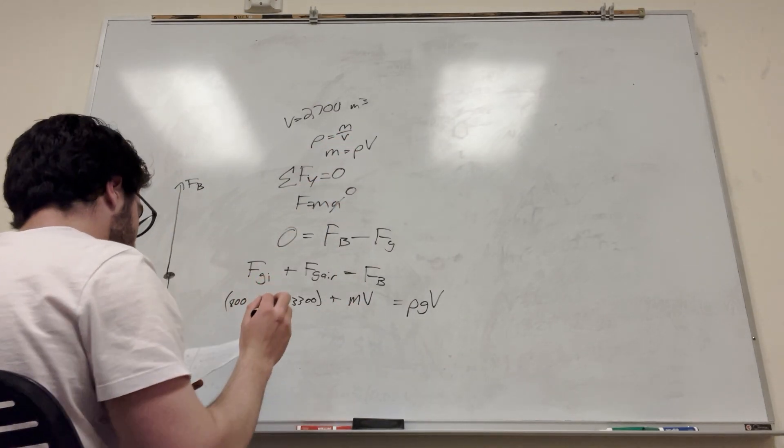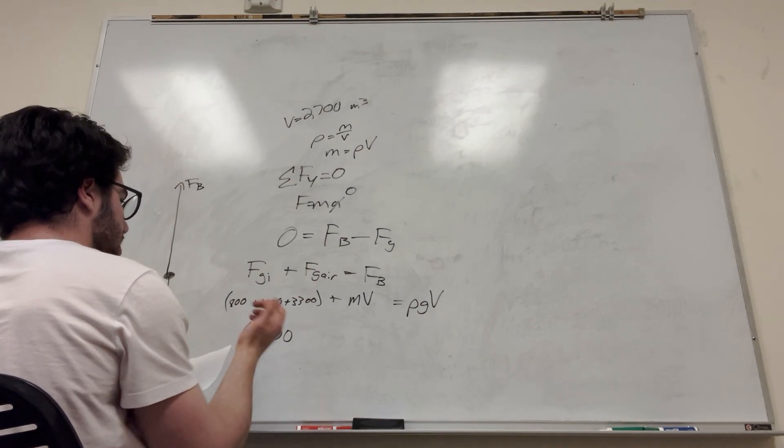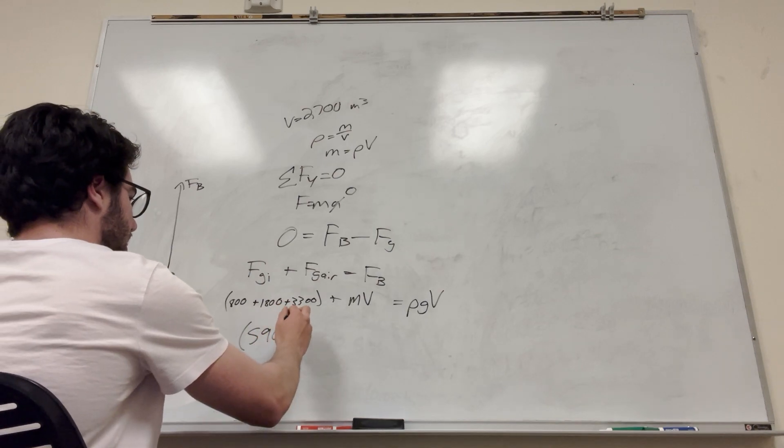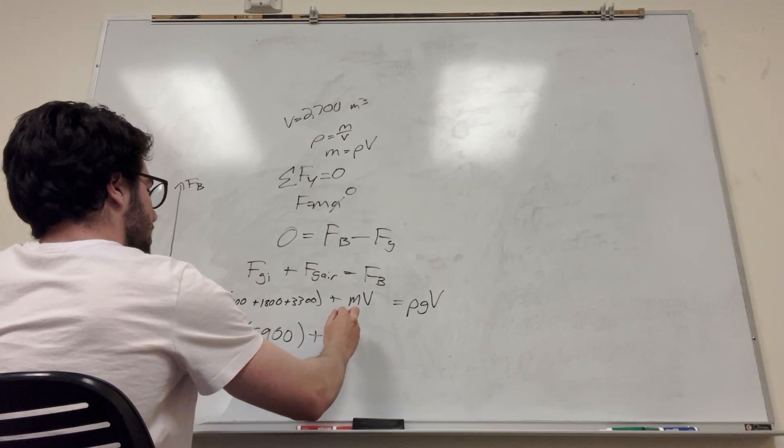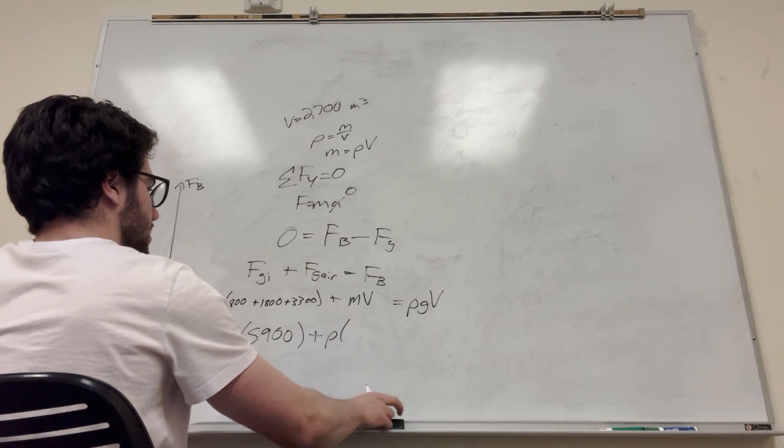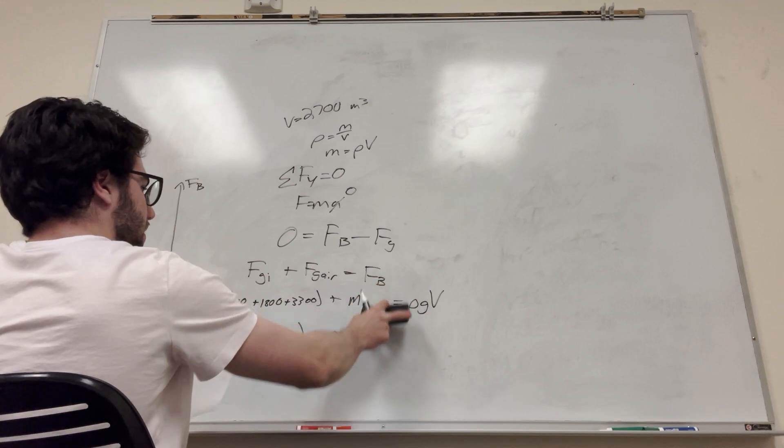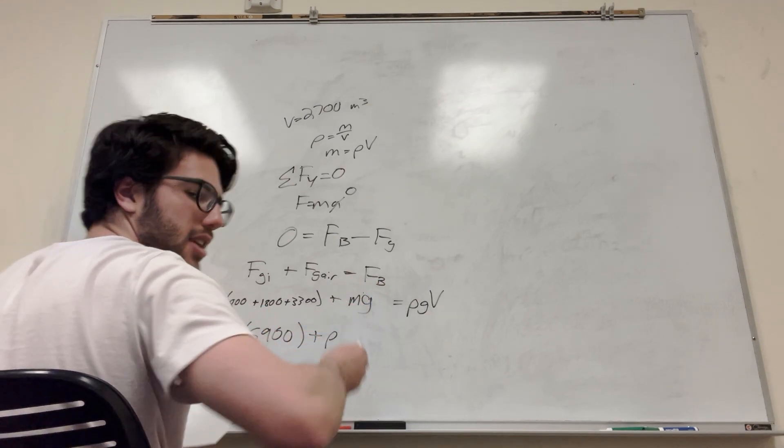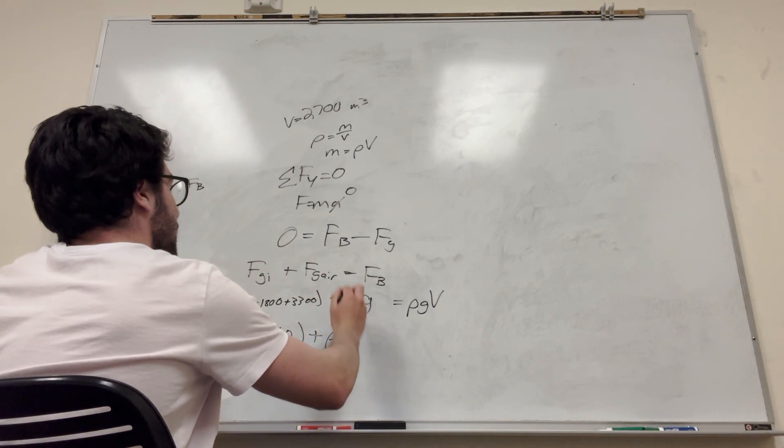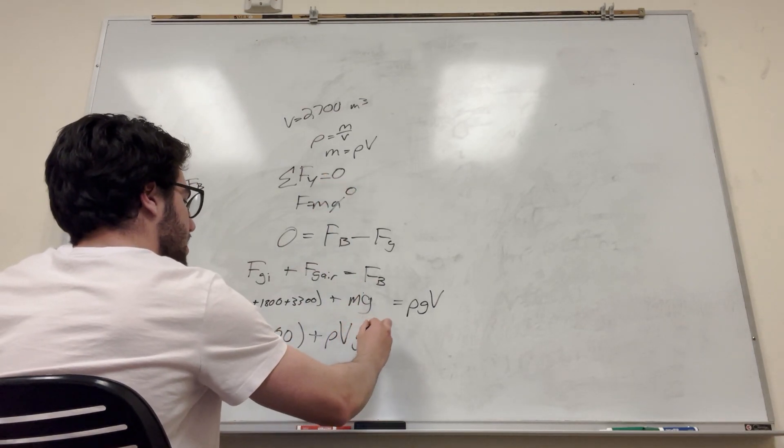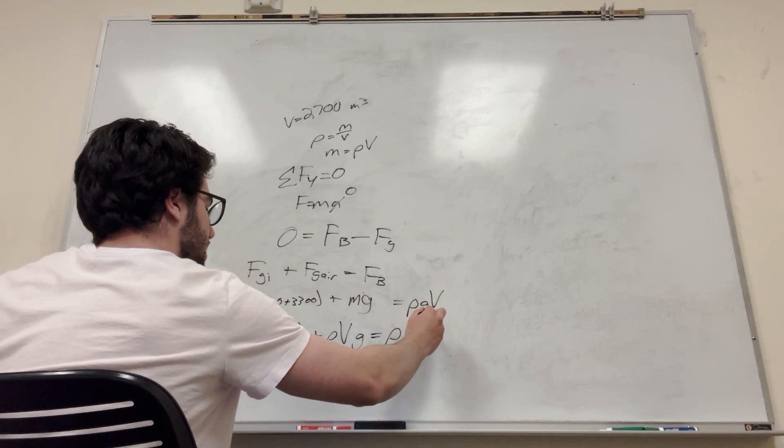So what we can do is we can move this into here in order to rearrange it. So all these numbers added together is 5,900. Plus, so it's going to be density. This is mass times gravity, of course. Density times volume instead of mass times gravity is equal to density of the air outside times gravity times the volume.